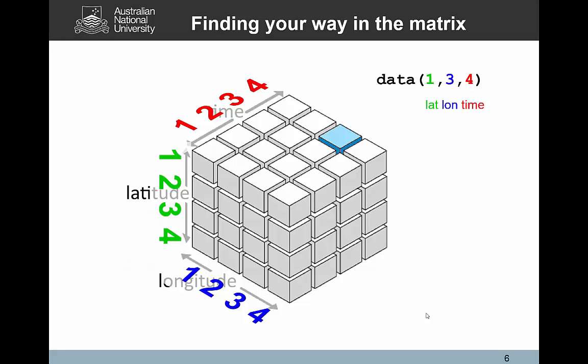So finding your way in the matrix can be a bit tricky, because different programming languages have different ways of referring to locations in the matrix, and we saw that in a previous video about MATLAB. Some start at zero, MATLAB starts at one, so the first element is always numbered one, and then the dimensions may vary as well. In this case here, we've got the latitude along here, longitude along here, and time along there.